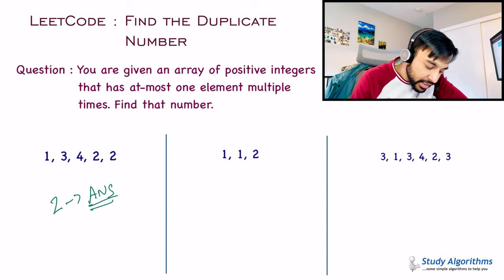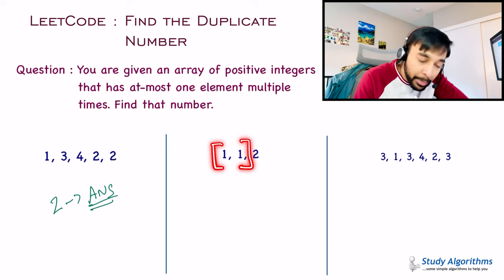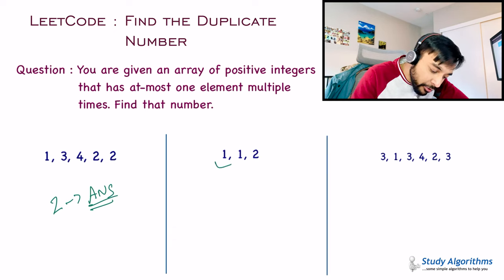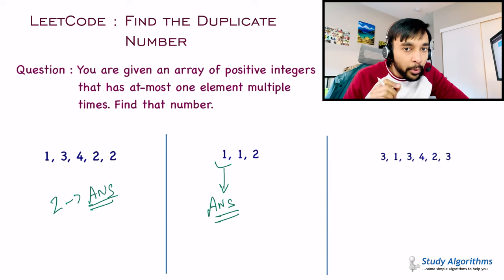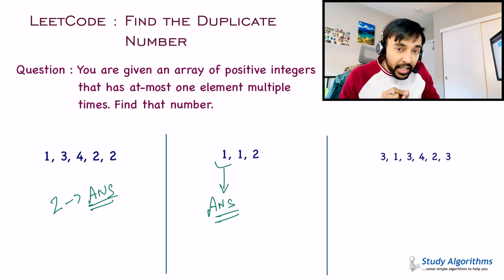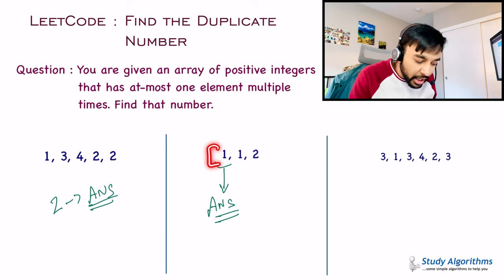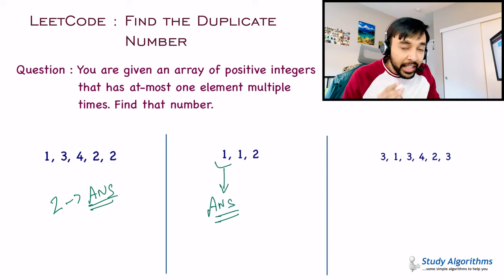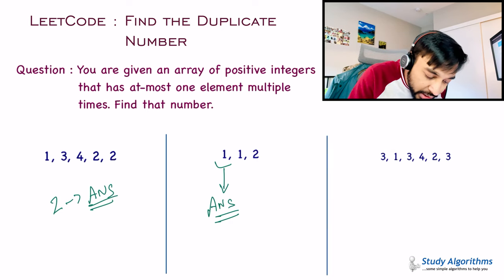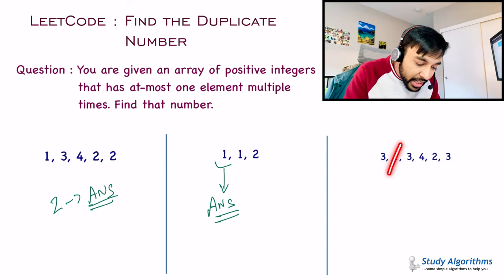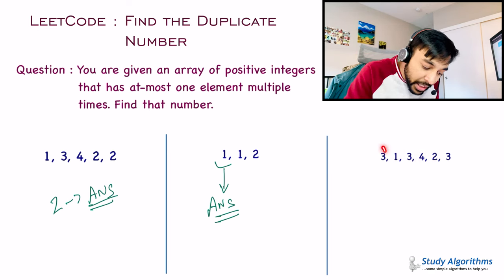Similarly, in test case number 2, you have a pretty short array, but even in this one you can see that the digit 1 is repeated 2 times, whereas the digit 2 is just unique. So in this case, 1 would be your answer. Now the most important part of this problem is that the repeated number can occur multiple number of times. In our first two test cases, the digit 2 appeared 2 times and the digit 1 appeared 2 times. But look at test case number 3 — the digit 3 appears 3 times, while all the other elements are unique. So your answer would be 3 in this case.